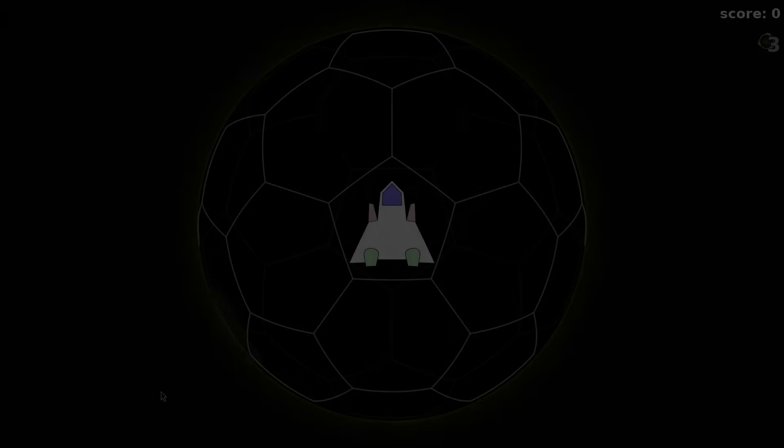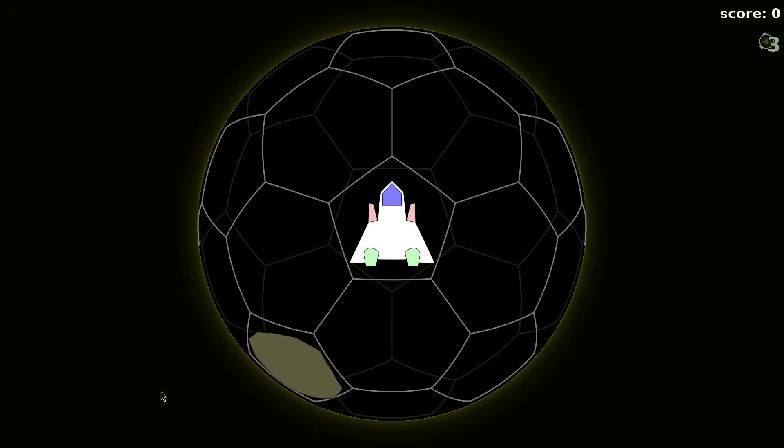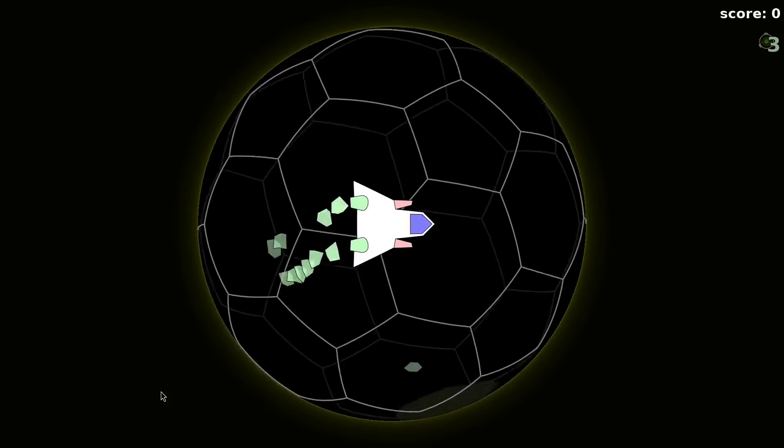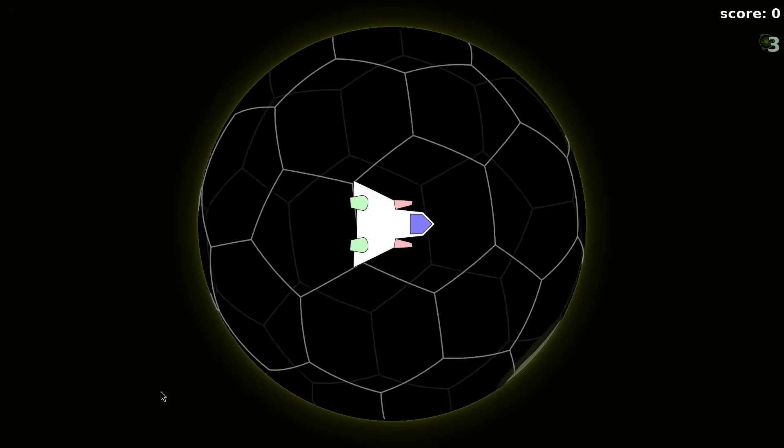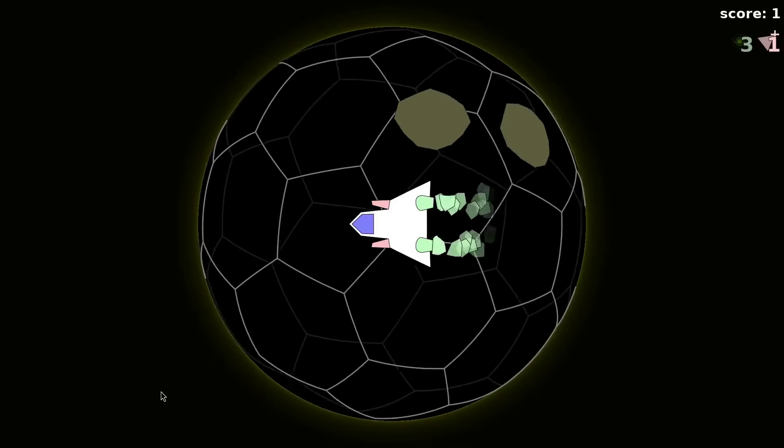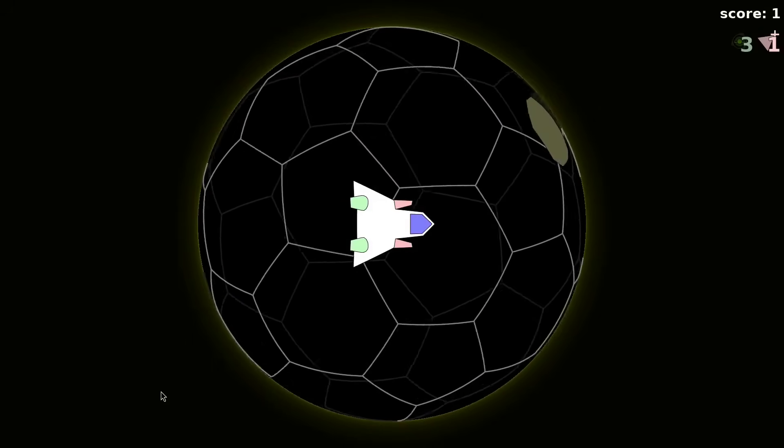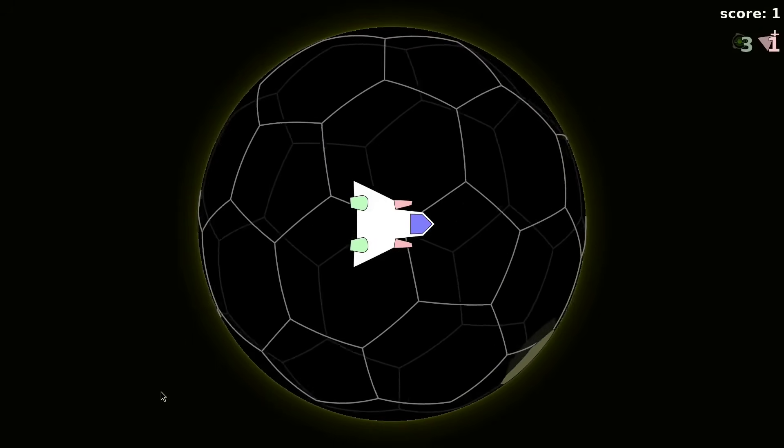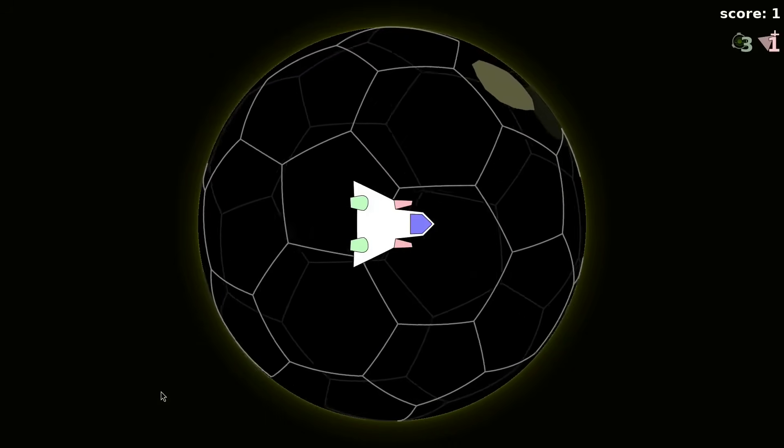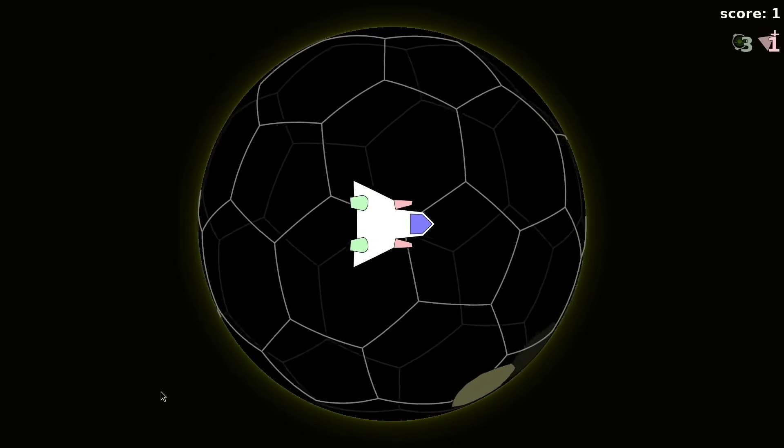Now let us move to spherical geometry. This is again space rocks but played on a sphere. Just like in the Euclidean space rocks, after our spacecraft speeds up, it moves forever in that direction. In the Euclidean geometry, it moves in a straight line. On the sphere, it moves in a great circle.